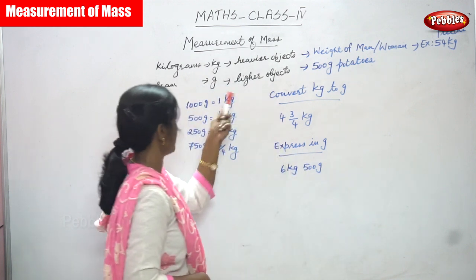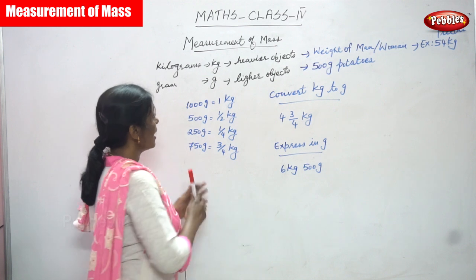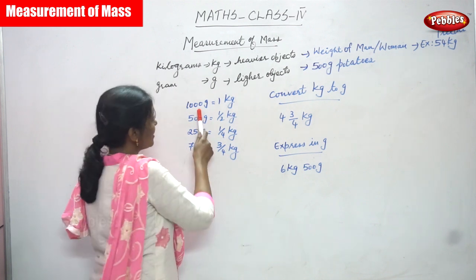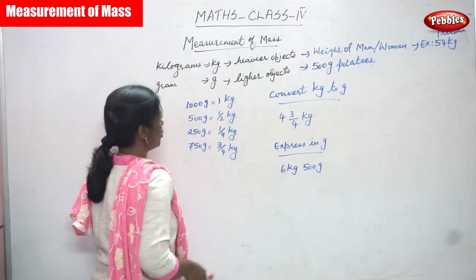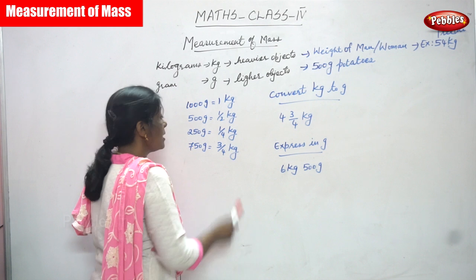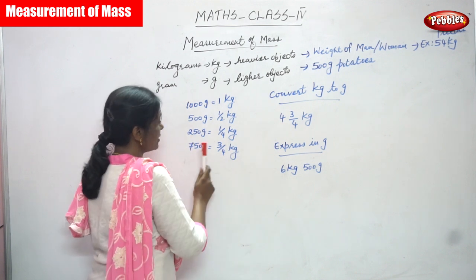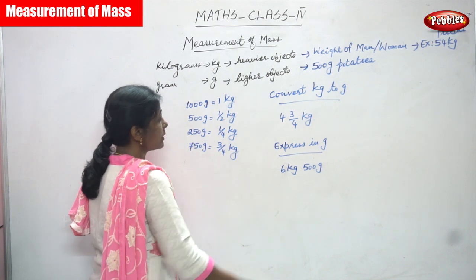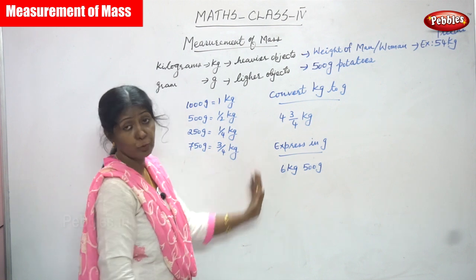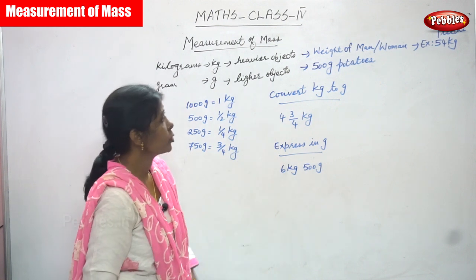This is the formula you have to memorize, otherwise you can't do the sums: 1000 grams equals 1 kilogram; 500 grams equals half a kg; 250 grams equals quarter kg; and 750 grams equals three-quarters kg. You have to memorize this.